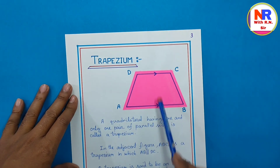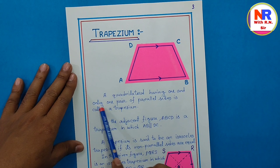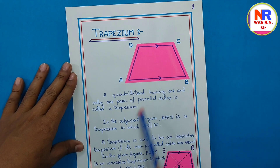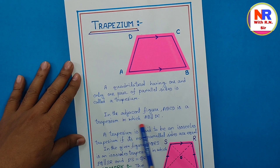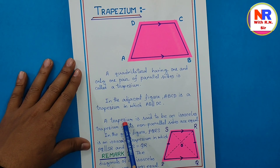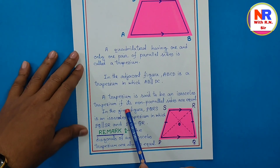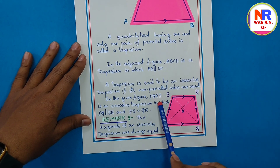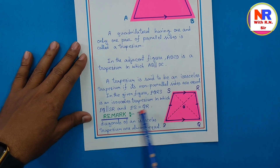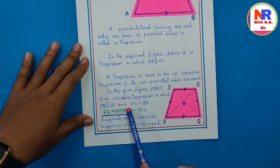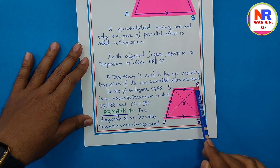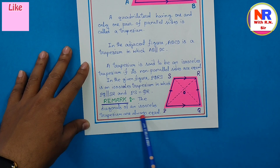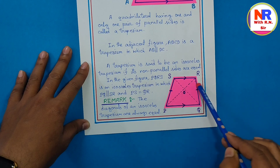Page number 3 — trapezium. A quadrilateral having one and only one pair of parallel sides is called a trapezium. You can see AB side and CD side are the parallel sides, so it's a trapezium. A trapezium is said to be an isosceles trapezium if its non-parallel sides are equal. In figure PQRS, PQ ∥ SR and PS = QR, so it's an isosceles trapezium. Remark: the diagonals of an isosceles trapezium are always equal — diagonal PR and diagonal QS are both the same length.